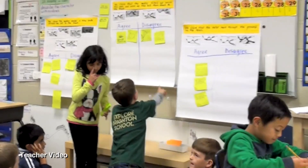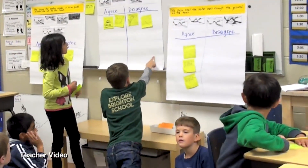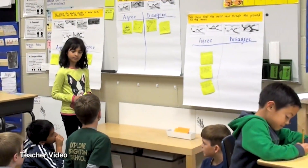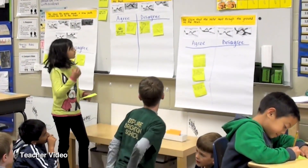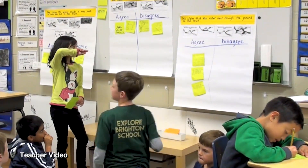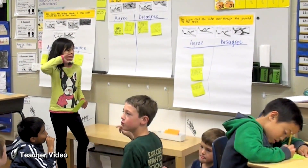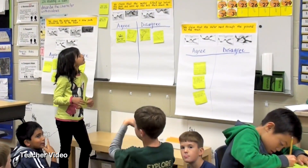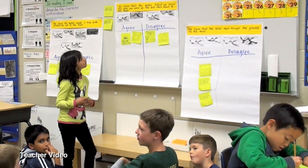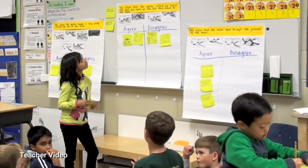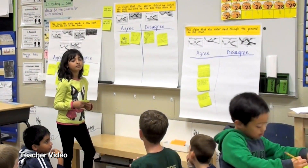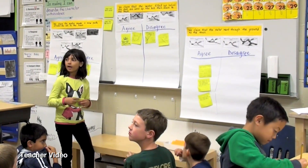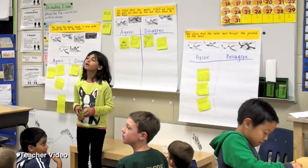I'm thinking it should go right here. Can you explain why? Well, because if one of them agrees, it would be it went in a new path — it's not because it says on top of the ground, but basically under the ground. So that's evidence to support that it didn't go on top of the ground, that it went under the ground.